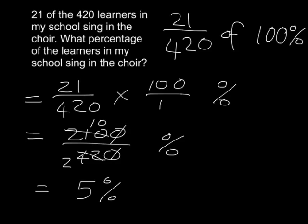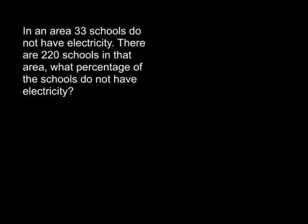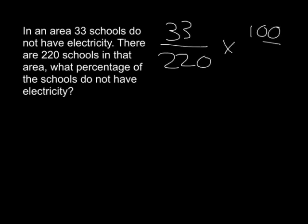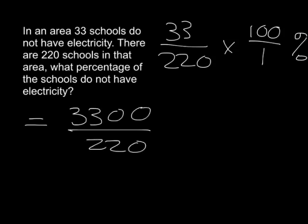Let's give you one to try. In an area, 33 schools don't have electricity, and there are 220 schools in the area. What percentage of the schools do not have electricity? Pause the video, open your homework book, and try this example. You need to calculate 33 over 220 of 100%, so the calculation gives you 3300 over 220 percent.